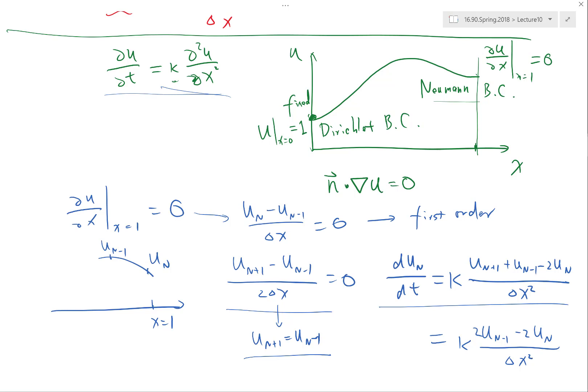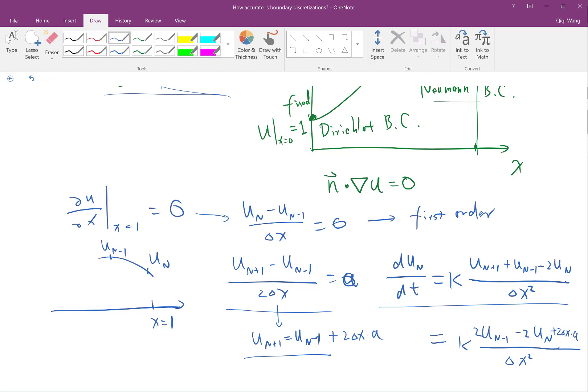And this can be used for any Neumann boundary condition. If this is equal to a, u_{n+1} just equal to u_{n-1} plus 2 delta x times a. And basically then you have a plus 2 delta x times a over here.